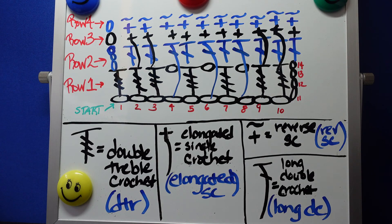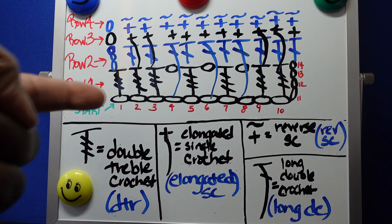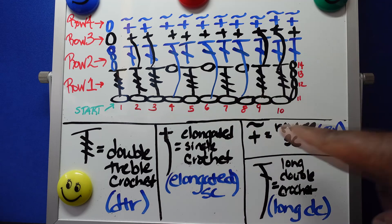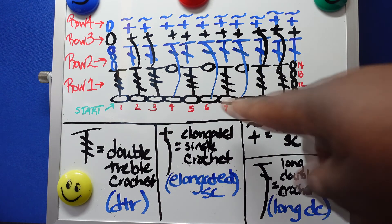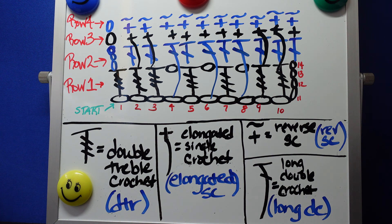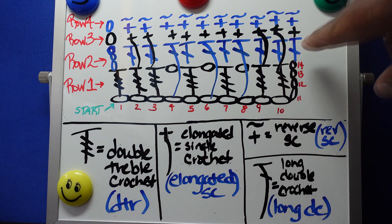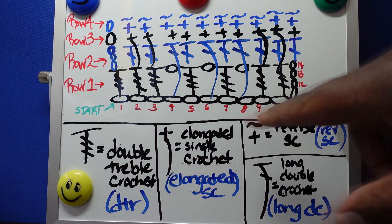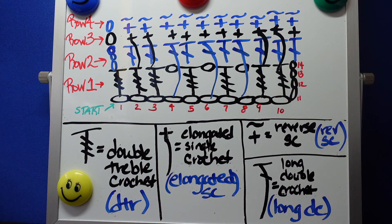Before we get to the actual crocheting, let's go through the diagram. Starting where it says 'start,' we need to chain 14. Then we're going to work a double treble crochet in the fifth chain from the crochet hook — another way to say it is the tenth chain. So counting from the start end: one, two, three, four, five, six, seven, eight, nine, ten — that's where you put your first stitch.